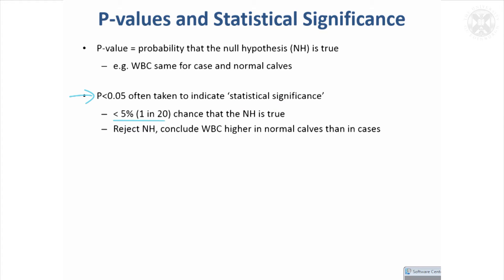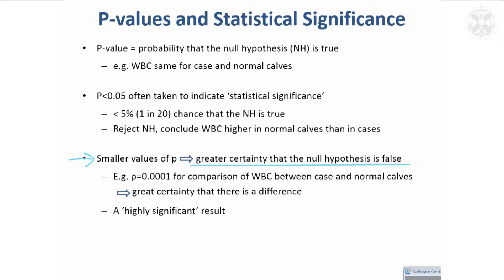The convention — sometimes called the five percent p-value — is that if your p-value is less than 0.05, you've got a statistically significant result. That equates to only a one-in-twenty chance that the null hypothesis is true, which is deemed good enough. Of course, the lower the p-value, the more certain you are — smaller p means greater certainty that the null hypothesis is false. In our case, p < 0.0001 gives us a lot of certainty that there is in fact a difference in white blood cell count between the two groups, and we can describe that as a highly significant result.